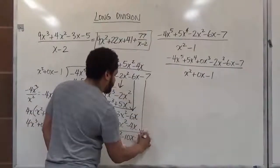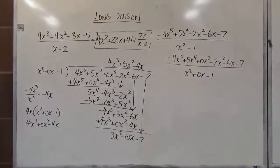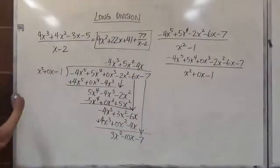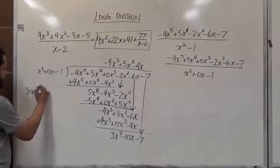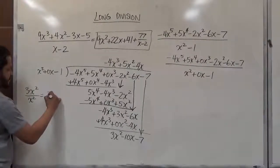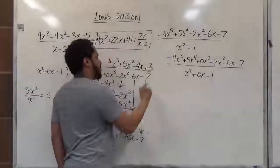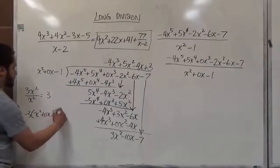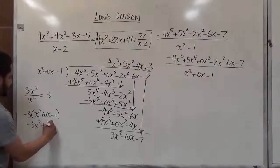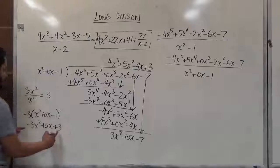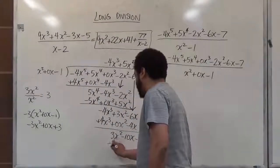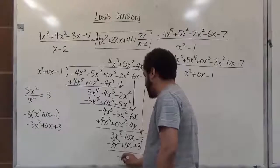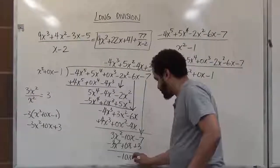We bring down negative 7 and repeat the process one more time. This is tedious, but it's just a repetition of steps — the same mechanism throughout. We have 3x squared divided by x squared, which gives us positive 3. We place positive 3 up top, take the opposite, negative 3, and multiply by x squared plus 0x minus 1, giving us negative 3x squared plus 0x plus 3. The first two cancel, the second two give negative 10x, and the last two give negative 4. This is our remainder.